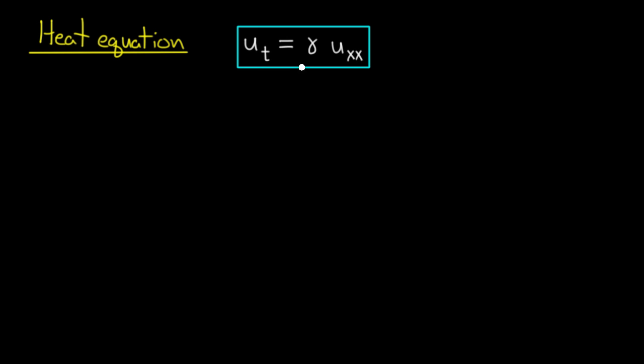So the heat equation is u_t equals gamma u_xx. This equation is often referred to as the diffusion equation because it describes the phenomenon of diffusion, and heat is just one good example of something which diffuses. Now gamma is a constant greater than zero, often referred to as the thermal diffusivity. It comes from material properties of the model we're dealing with and controls the rate at which heat diffuses.